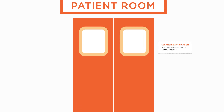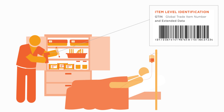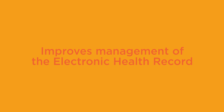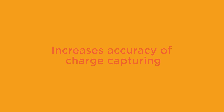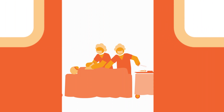In the patient room, identified by a GLN, GTINs with extended data on product packaging are scanned at the point of care, capturing critical information to enable patient safety and supply chain processes. This improves management of the electronic health record and increases accuracy of charge capturing.